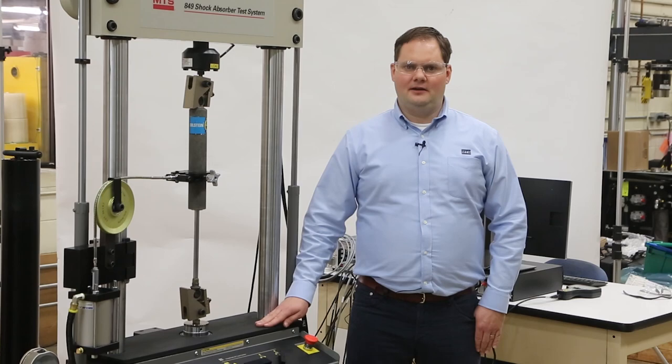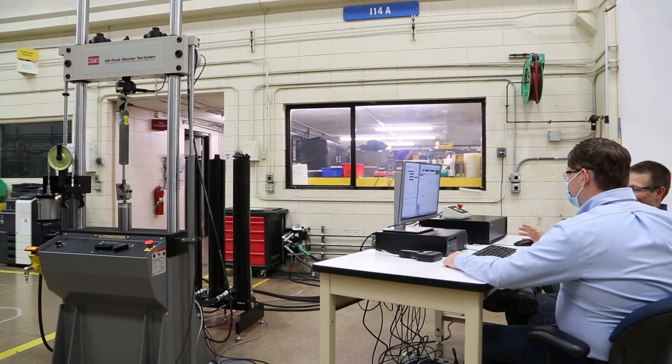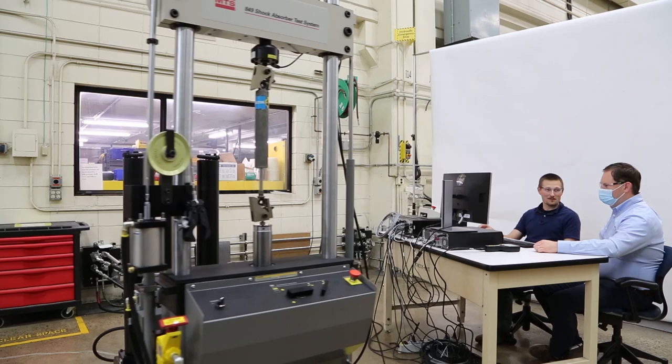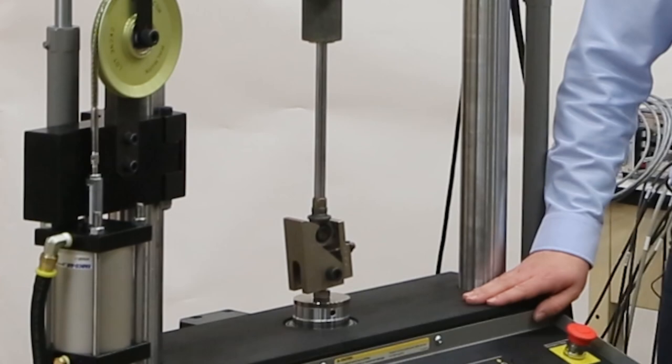It is a great choice as an initial investment in a new damper lab, or for use as a quality audit system just off the production line. A highly stiff frame allows the 849 to generate accurate data when performing high dynamic test profiles. An adjustable crosshead accommodates a wide range of test specimens, and the frame's compact footprint makes the most of your lab or production facility space.